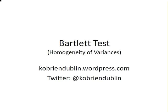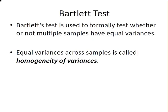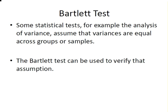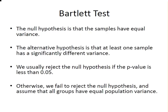In this presentation, we are going to look at the Bartlett test for homogeneity of variances. The Bartlett test is used to formally test whether or not multiple samples have equal variance. Some statistical procedures, for example ANOVA, assume that variances are equal across groups or samples. The Bartlett test can be used to verify this assumption. The null hypothesis is that the samples have equal variance, whereas the alternative hypothesis is that at least one sample has a significantly different variance. We usually reject the null hypothesis if the p-value is less than 0.05; otherwise, we fail to reject the null hypothesis and assume that all groups have equal variances.